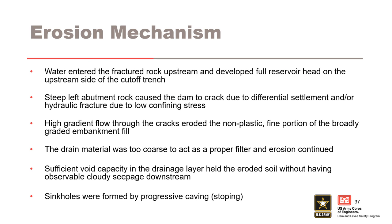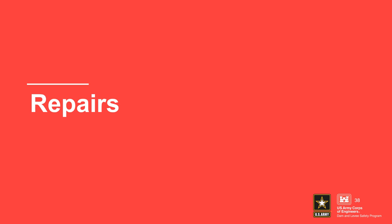This slide provides a summary of the erosion mechanism. Water entered into the fractured upstream rock and developed full reservoir head on the upstream side of the cutoff trench. The steep left abutment rock caused the dam to crack due to differential settlement and/or hydraulic fracture due to low confining stress. High gradient flow through the cracks eroded the non-plastic fine portion of the broadly graded embankment fill. The drain material was too coarse to act as a proper filter and erosion continued. Sufficient void capacity in the drainage layer held the eroded soil without observable cloudy seepage downstream. Sinkholes were formed by progressively caving or stoping.